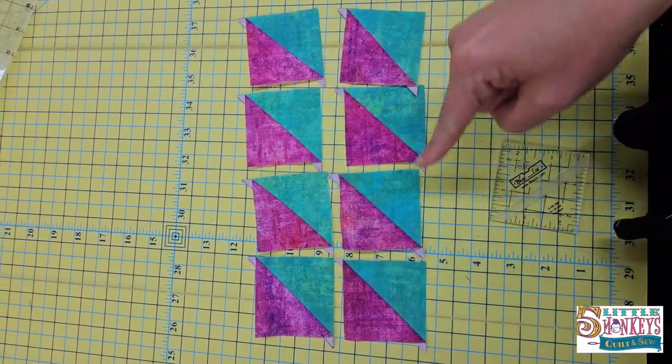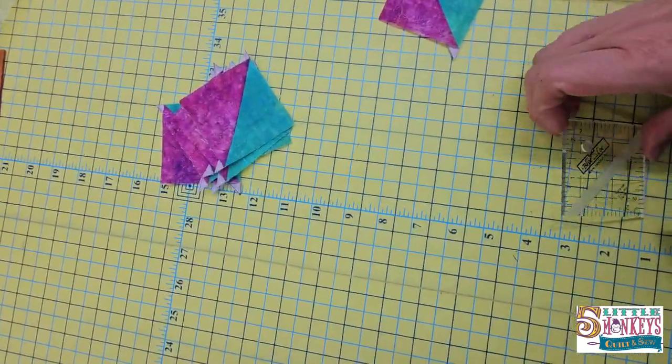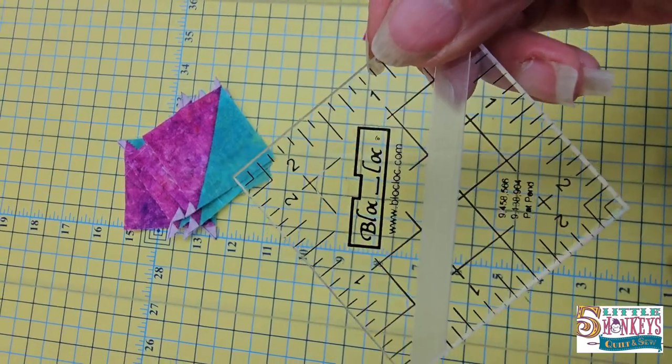So now I have eight half square triangles. One at a time, I'm going to trim them down using my handy dandy two inch finished block lock triangle trimmer.